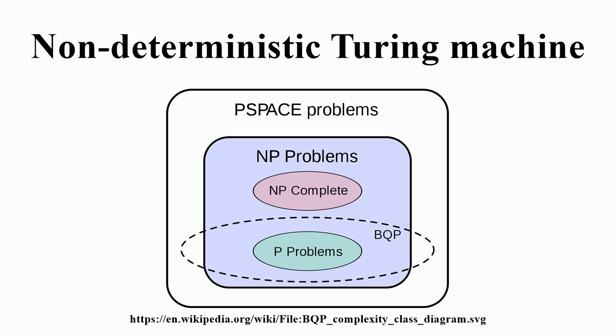An example of one of a Turing machine's rules might be: if you are in state 2 and you see an A, change it to B and move left. In a deterministic Turing machine, the set of rules prescribes one action to be performed for any given situation. By contrast, a non-deterministic Turing machine may have a set of rules that prescribes more than one action for a given situation.